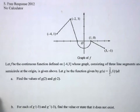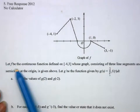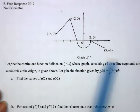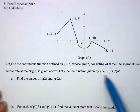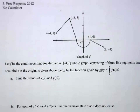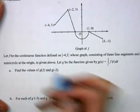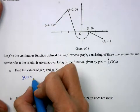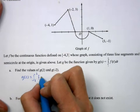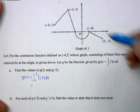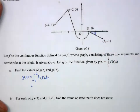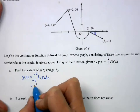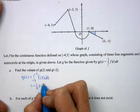For the free response: f is a continuous function on negative 4 to 3, consisting of 3 line segments and a semicircle. g of x equals the integral from 1 to x of f of t. g of 2 is the integral from 1 to 2 of f of t — just that little triangle, which is negative one half times 1 times one half, so negative one fourth. It's negative because it's below the x-axis.